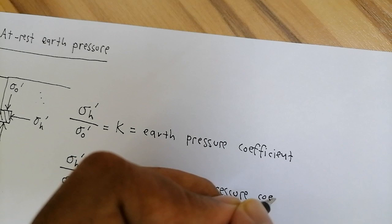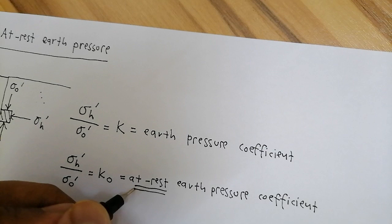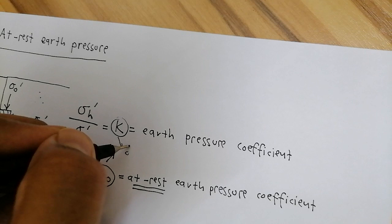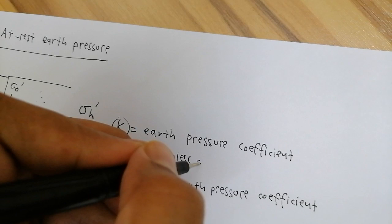K₀ is the at-rest earth pressure coefficient, and we must remember that K₀ is dimensionless — meaning it has no units.